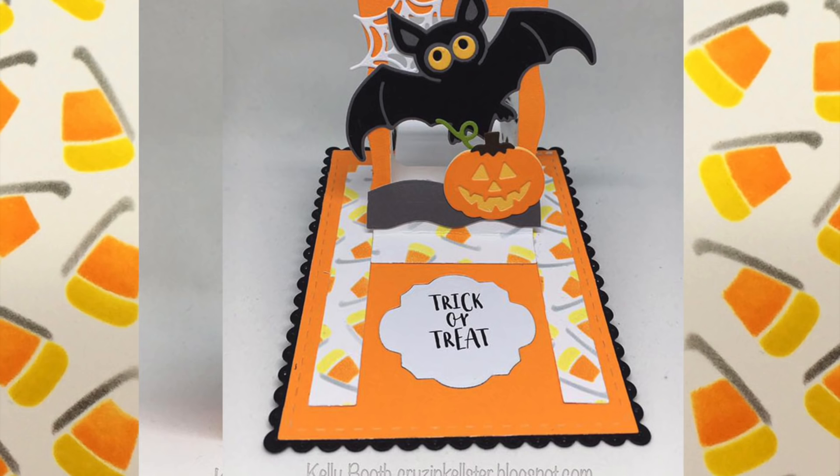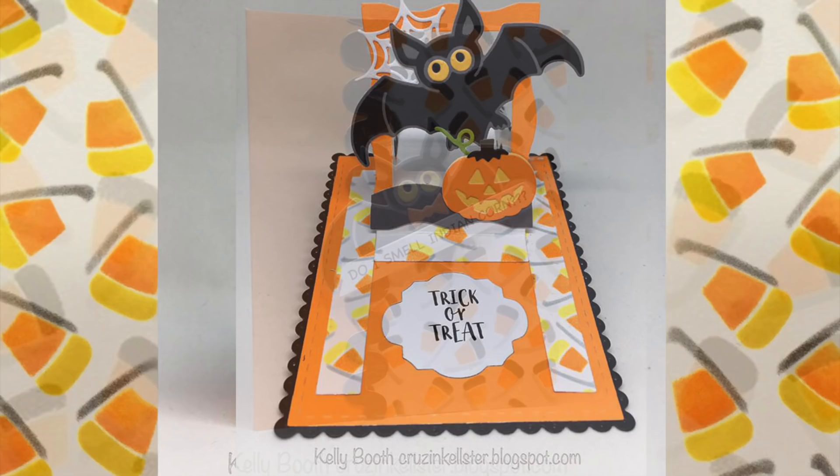If you use brown instead of yellow for the first column, you'll actually get Indian corn. And so here's another fun card by Kelly Booth. This one also uses Midnight the Bat.